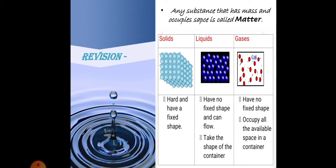Liquids take the shape of the container they are poured into. Gases are substances in which the particles are very loosely packed. They too have no fixed shape. Unlike liquids, they occupy all the available space in a container.